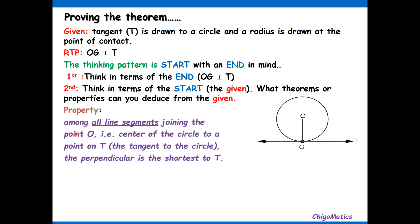The property is: among all line segments joining point O, the center of the circle, to a point on T, the tangent to the circle, the perpendicular is the shortest to T.